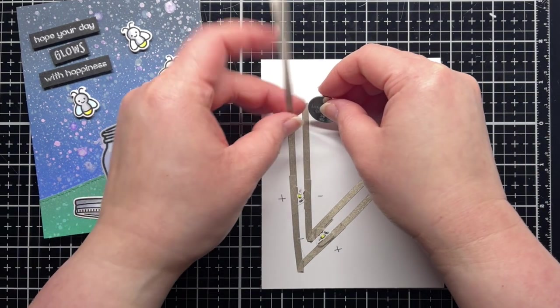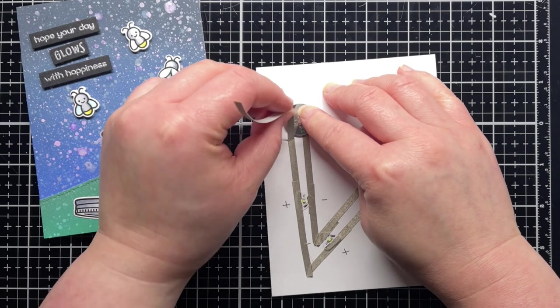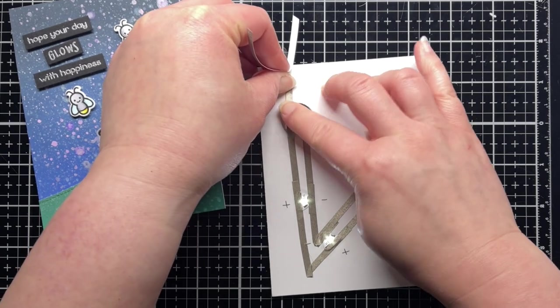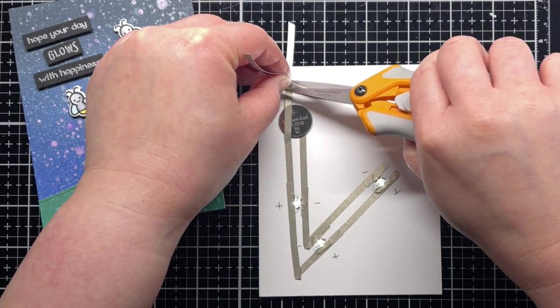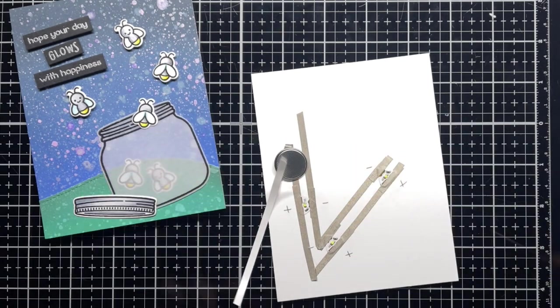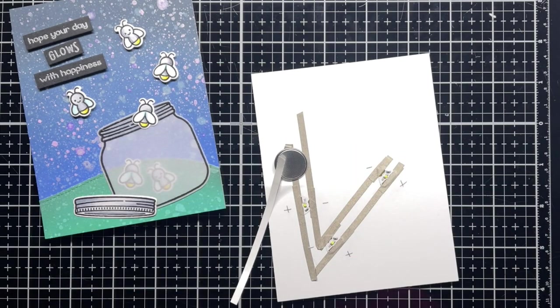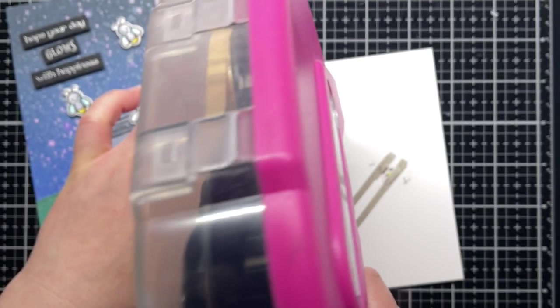Finally, I slide my battery over the negative side of my circuit. Then I remove the adhesive backing from the other piece of fabric tape and press it to the top of the battery to complete my circuit.